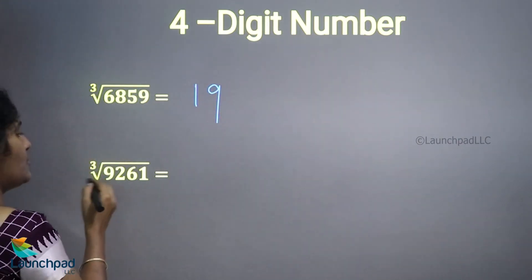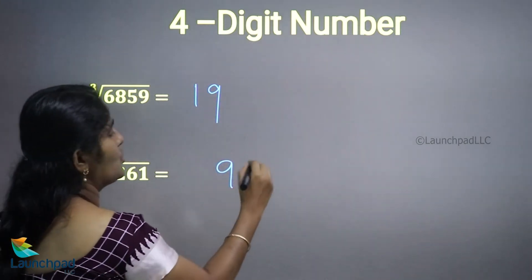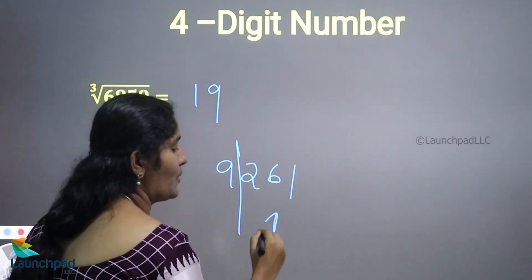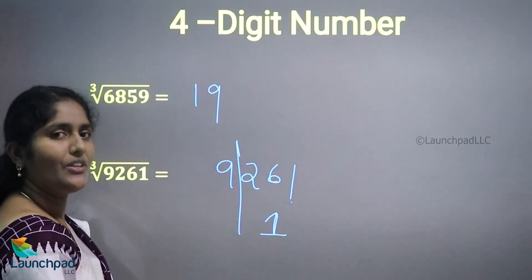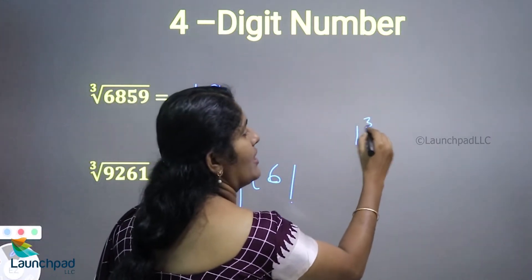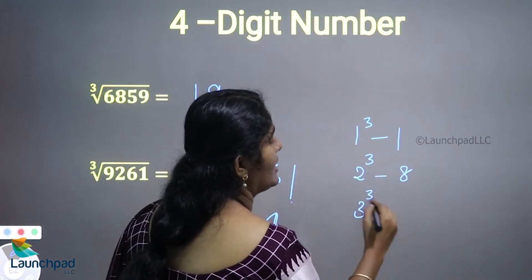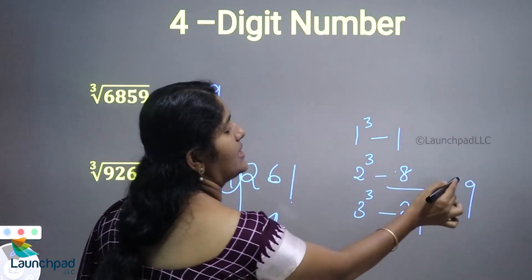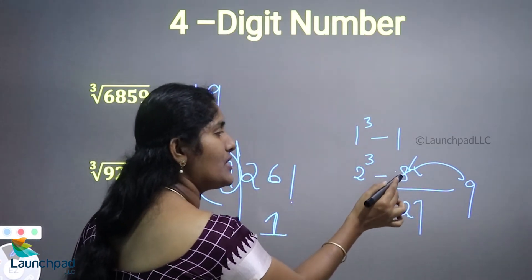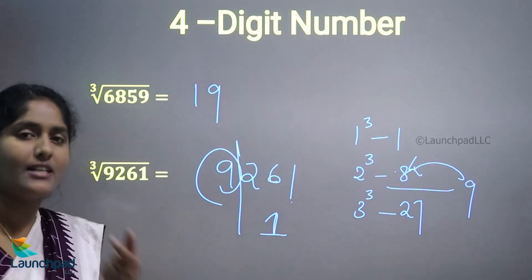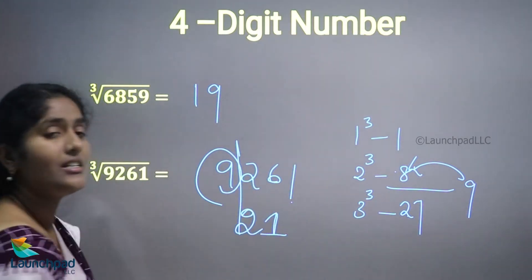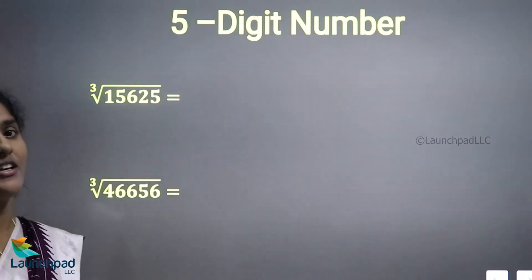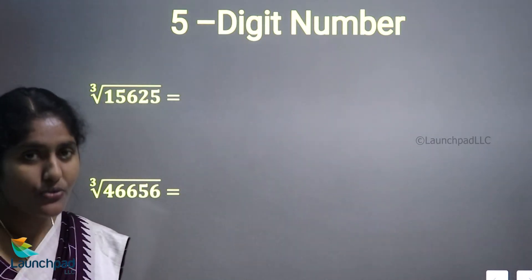Next: cube root of 9261. Split into groups of 3 from the right: first part is 9, second part is 261. The unit digit is 1, and 1 cubed always ends with 1, so the unit digit is 1. Now 9 lies between 8 (2 cubed) and 27 (3 cubed). We take the previous value, which is 8, corresponding to 2 cubed. So the first digit is 2. Therefore the cube root of 9261 is 21.